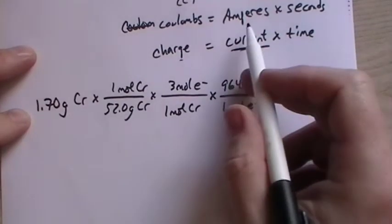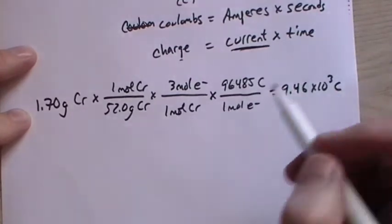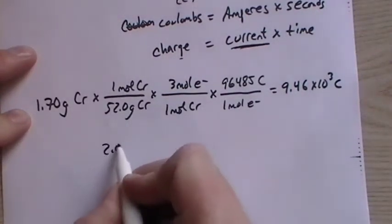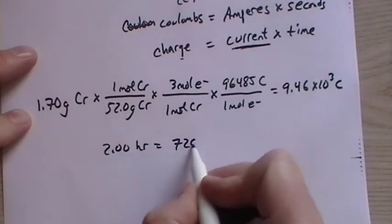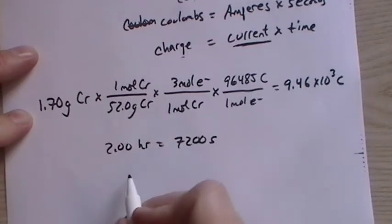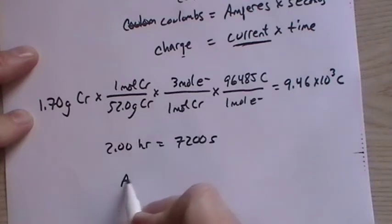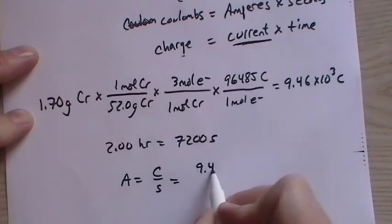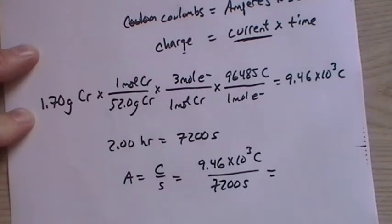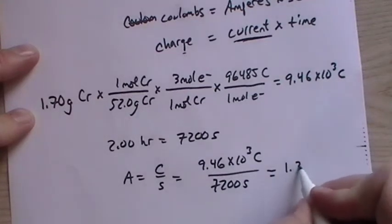Now we want current. We want amps. And that's coulombs per second. How much of this charge is passing by a certain point per second? So two hours equals 7,200 seconds. And we want amps, so it's going to be coulombs per second. We have 9.46 times 10 to the third coulombs over 7,200 seconds. 9.46 times 10 to the third divided by 7,200. So we get 1.31 amps.